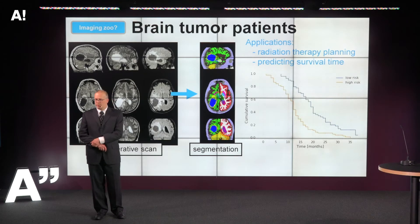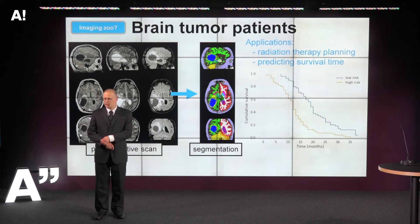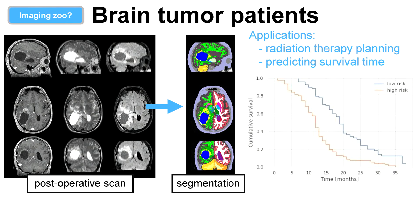Here's an example of applying these techniques. What you see is a post-operative scan taken in Copenhagen — in that hospital they use three different contrasts, taken after surgeons tried to remove as much of the tumor as possible. With these tools, without knowing anything about the scanner settings or acquisition decisions, you can get an automatic segmentation — both of the tumor and of many other different structures.